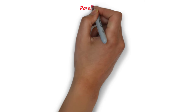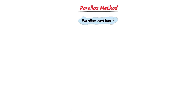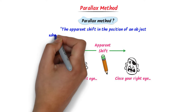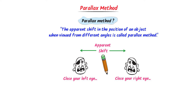The parallax method is understood by looking at a pencil, closing each eye alternately — the pencil appears to shift left and right. This apparent shift due to the distance between two observation points is the parallax. We define parallax as the apparent shift in the position of an object when viewed from different positions. It is used to measure large distances, such as the distance between Earth and the Moon.